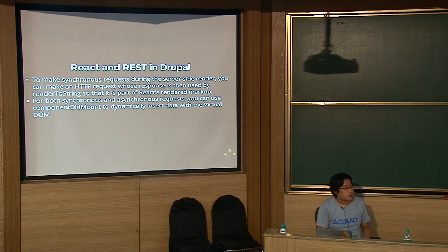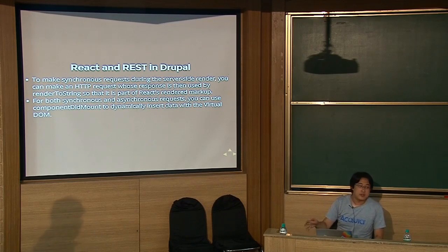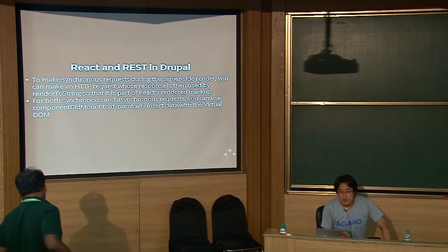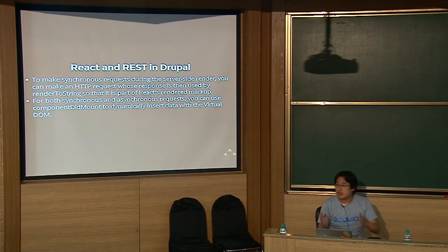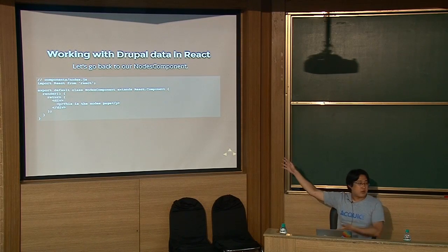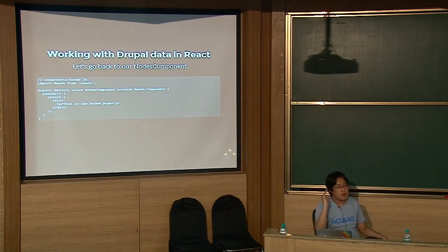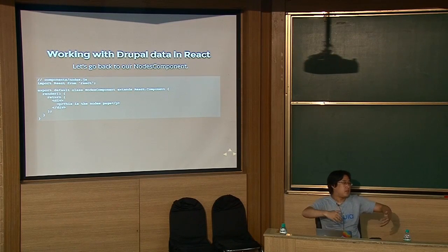In the React API, `componentDidMount` is often used for both synchronous requests on the server-side and asynchronous requests on the client-side, and you can dynamically insert data into the virtual DOM with this approach. Going back to our NodesComponent, we add additional functions to enable React's state machine. We add an import for Superagent, a `getInitialState` function that defines the blank default state of our component with title and body fields — that's how we define default state for each component.